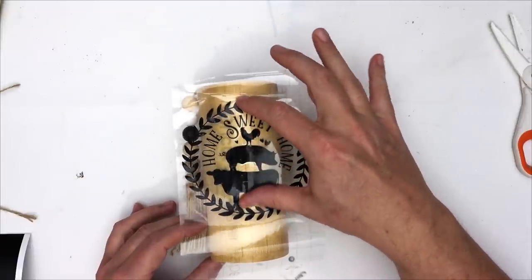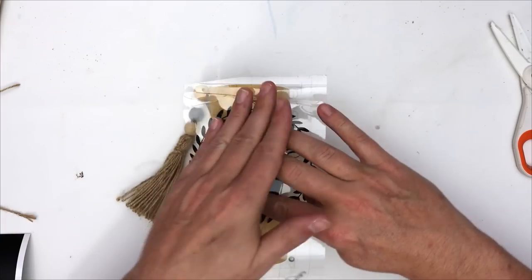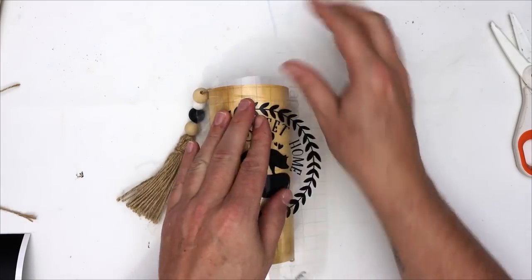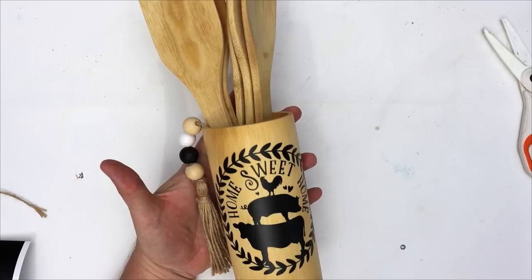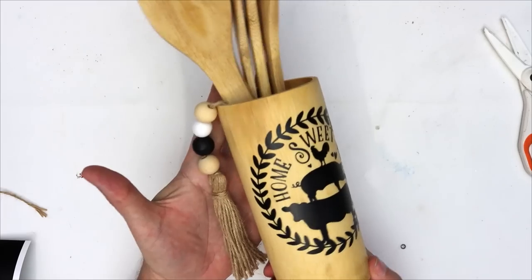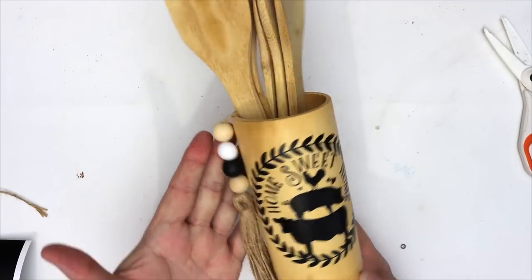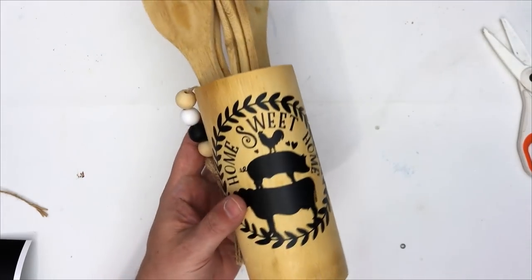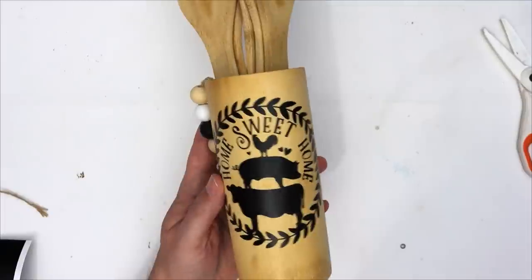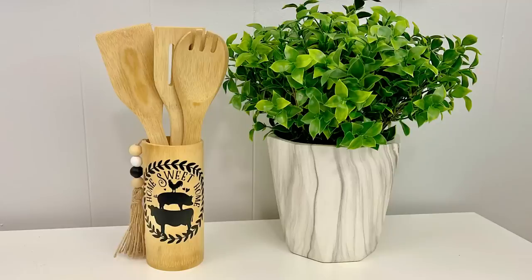Now once again, if you don't have a Cricut or a Cricut Joy or anything like that, this is not a big deal because you can get so many great stickers and rub-on transfers and paint pens and different things at Dollar Tree that you could very easily use to customize and personalize any of these blanks that I'm showcasing today.